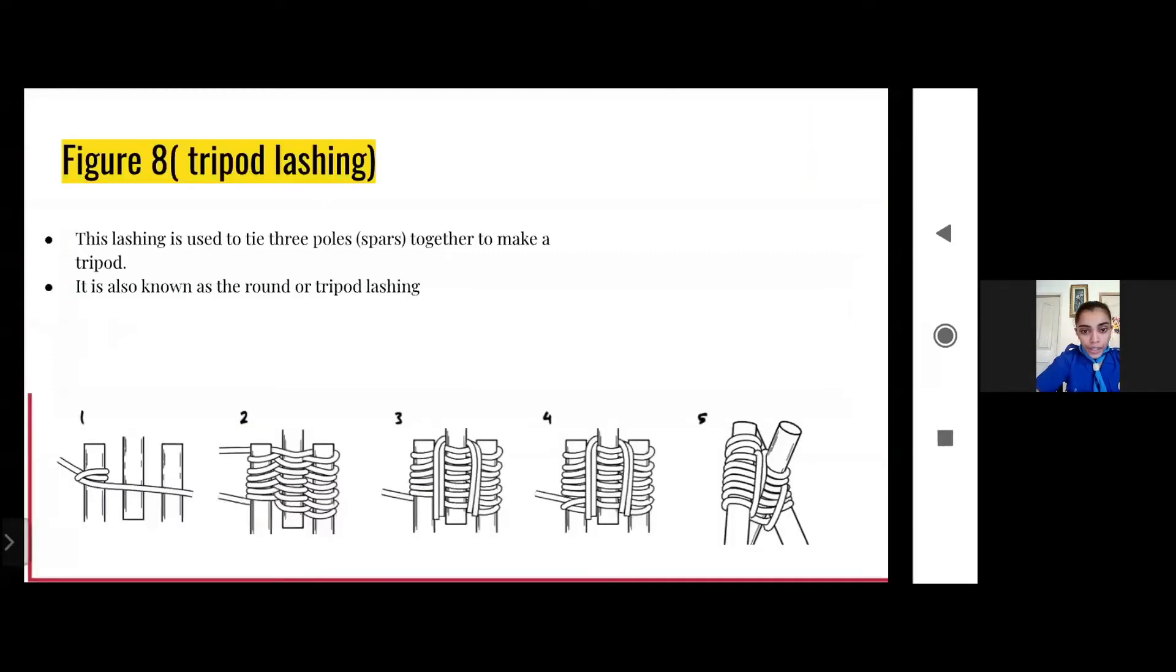So what is the figure eight lashing? This lashing is basically used to tie three poles, the parallel poles together to make a tripod. It is also known as the round or tripod lashing.